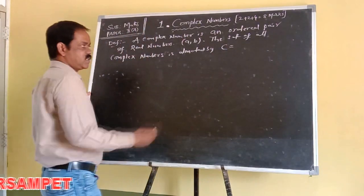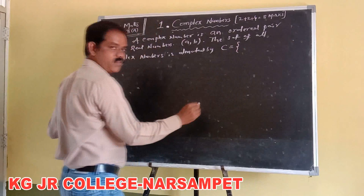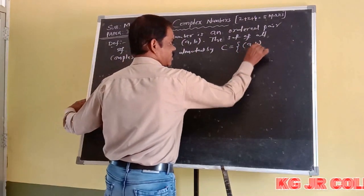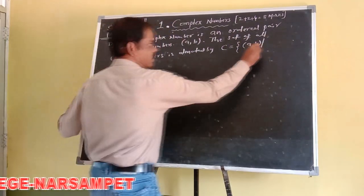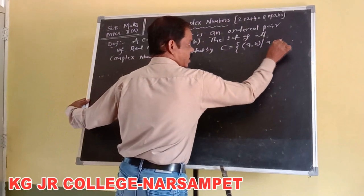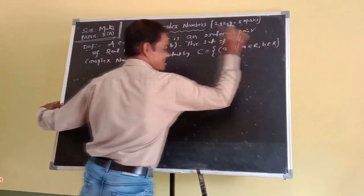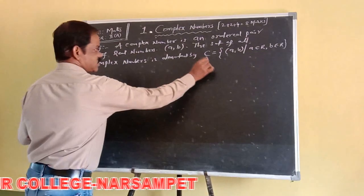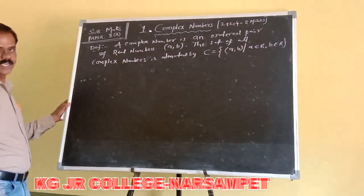Capital C is equal to the set of ordered pairs (a, b) such that small a and small b both belong to the set of real numbers. This is the set form of the complex number.